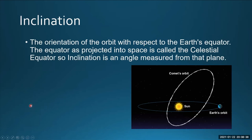Another thing is the inclination. This one's pretty easy. It's usually represented with a small i. It's the orientation of the orbit of the object with respect to the Earth's equator. This is usually measured in degrees.